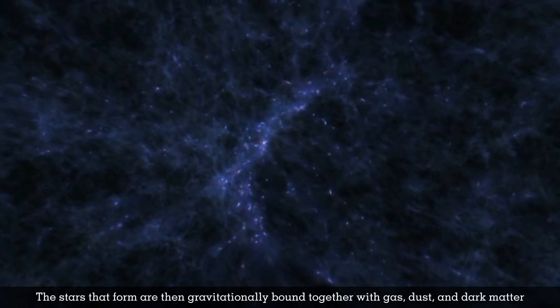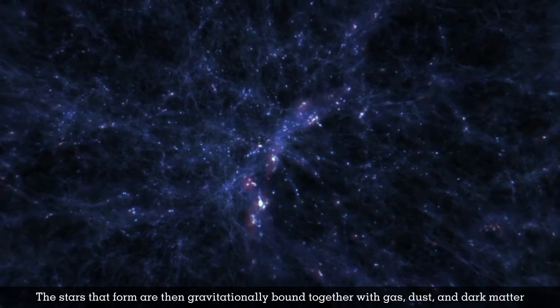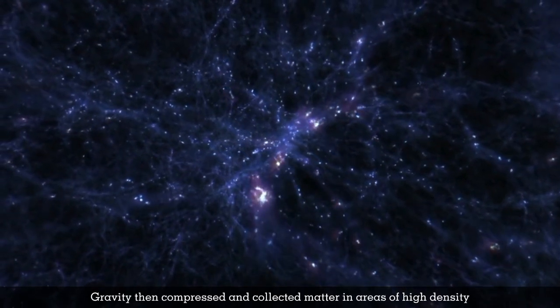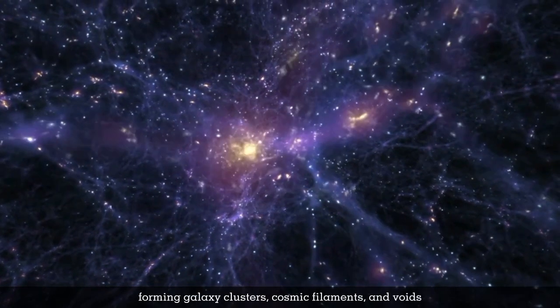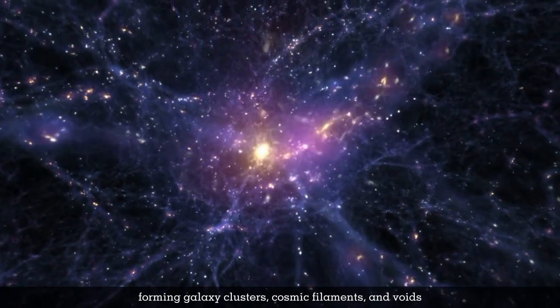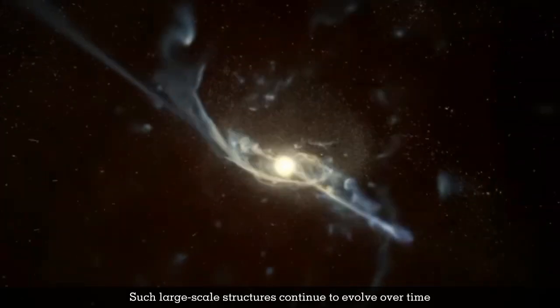The stars that form are then gravitationally bound together with gas, dust and dark matter. Gravity then compressed and collected matter in areas of high density, forming galaxy clusters, cosmic filaments and voids. Such large-scale structures continue to evolve over time.